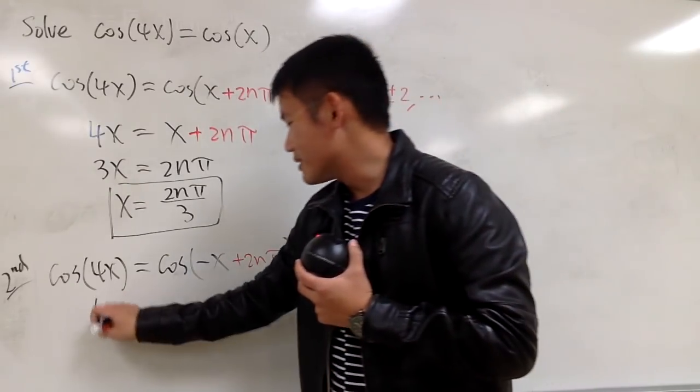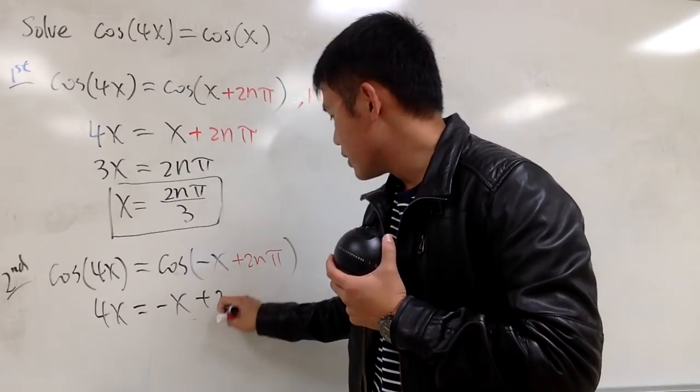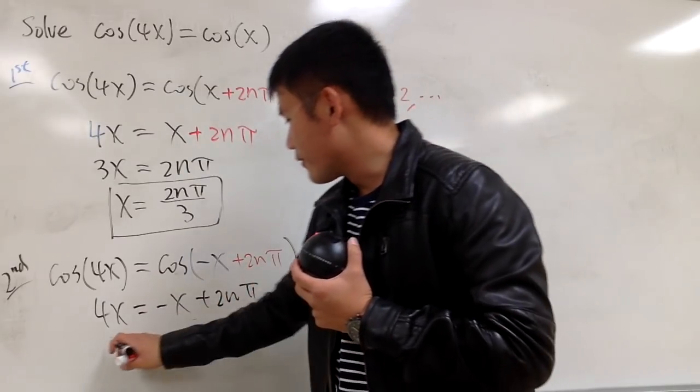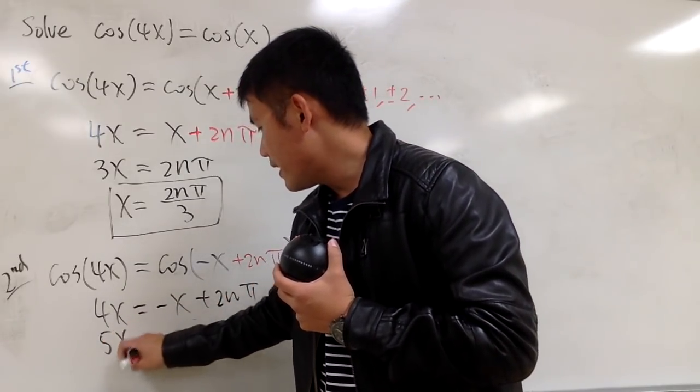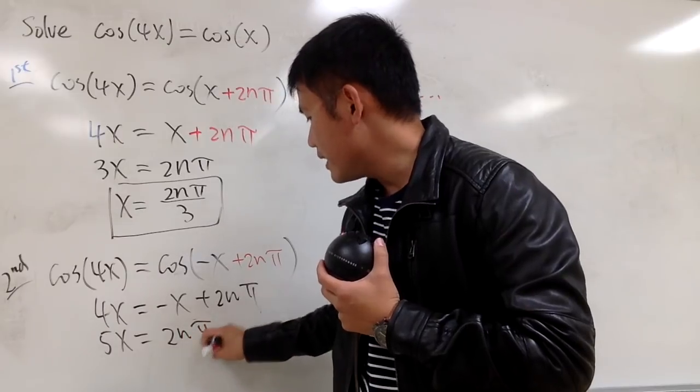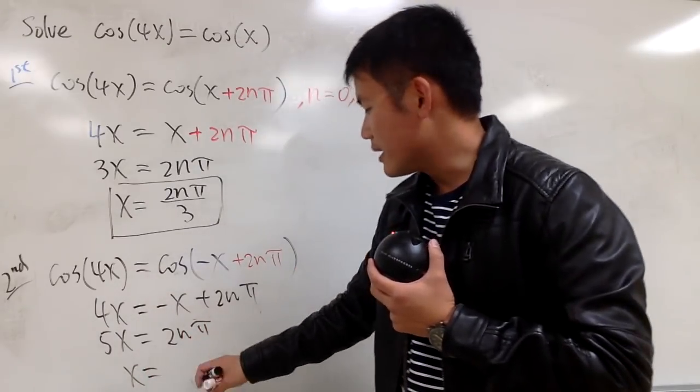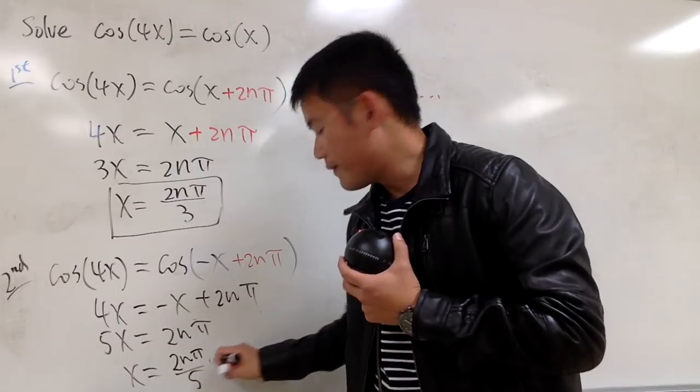And now, we are in business. 4x equals negative x plus 2nπ, and then of course, add the x on both sides, 5x equals 2nπ, and in the end, we get x equals 2nπ over 5.